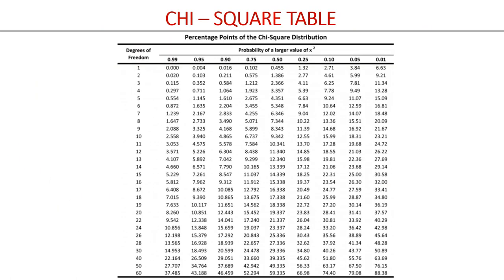This is the chi-square table we shall follow. The degrees of freedom are given, and as per the required level of significance we choose the respective column to identify the table value for comparison. By default we use the 0.05 column.